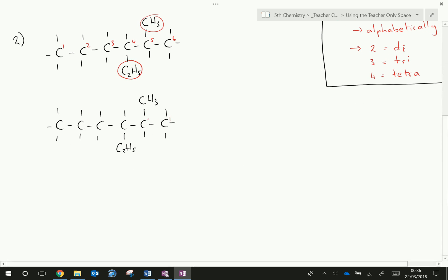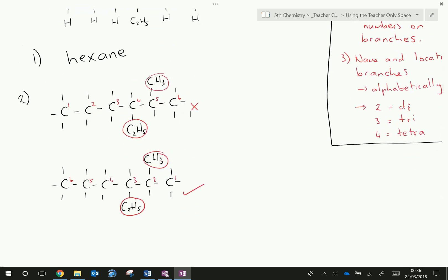Whereas if I go the other way around, so from right to left, I see that my branches are on carbons 2 and 3, which are lower numbers than above. So because these are the lower numbers, that's the correct way that I'm going to number it. That's the way we're going to number the compound, number the carbons. So that's step 2 done. On to step 3.